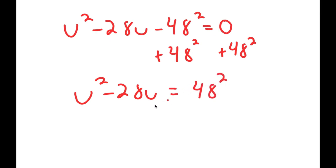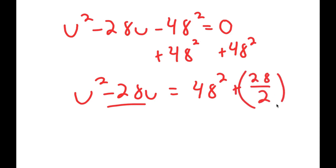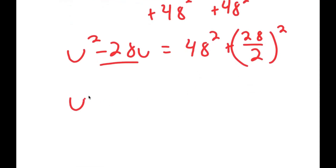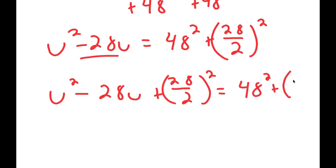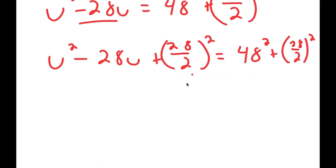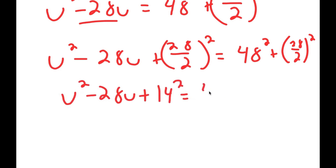To complete the square, I take the coefficient of u, which is 28, divide it by 2 to get 14, and add 14 squared to both sides. If you're unfamiliar with completing the square, go watch a video on it. So I add 14 squared to both sides.